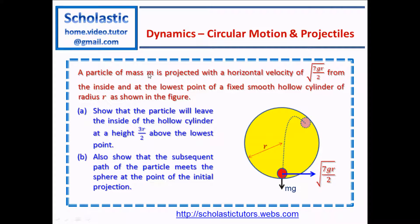A particle of mass m is projected with a horizontal velocity of √(7gr/2) from the inside and at the lowest point of a fixed smooth hollow cylinder of radius r, as shown in the figure. There is a hollow cylinder of radius r, and inside of that, at the lowest point, there is a particle of mass m with a horizontal velocity √(7gr/2). G is the gravitational constant and r is the radius of the hollow cylinder. Show that the particle will leave the inside of the hollow cylinder at a height 3r/2 above the lowest point.